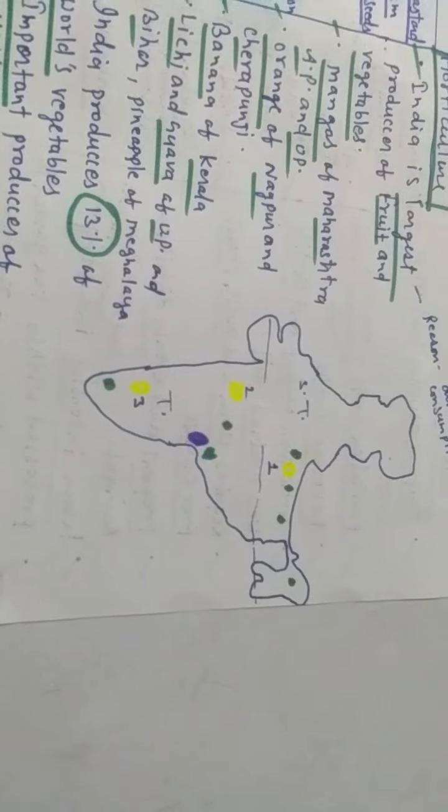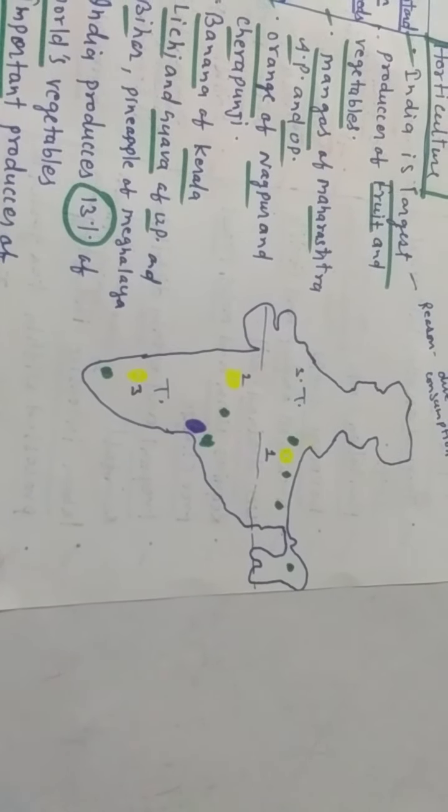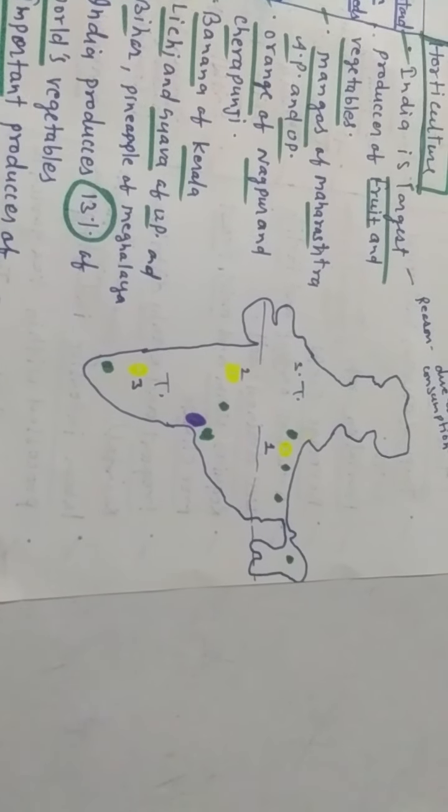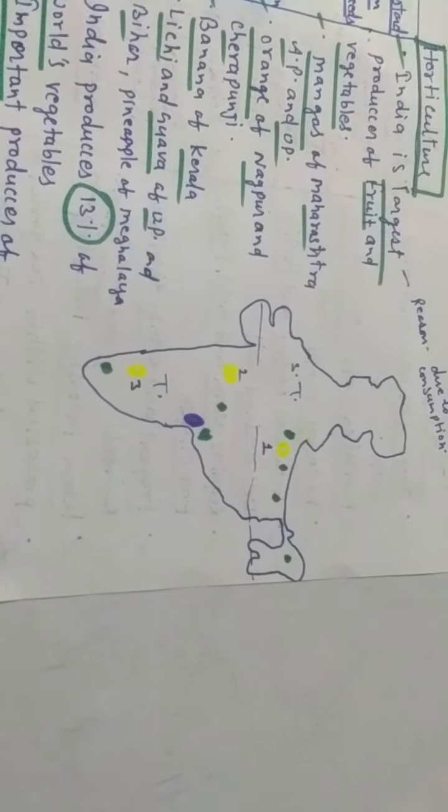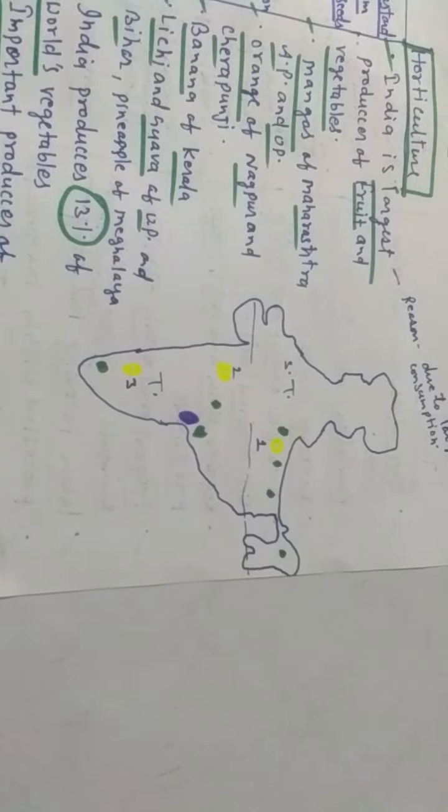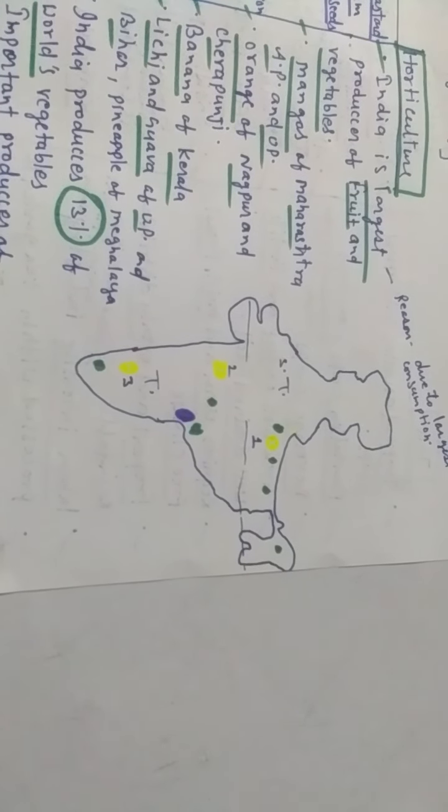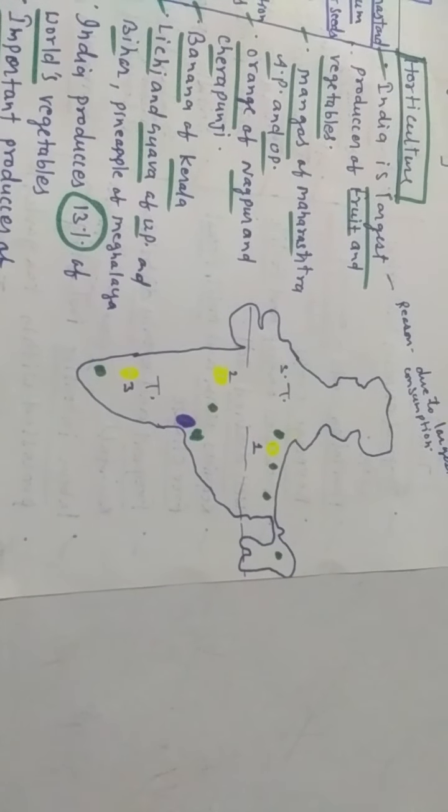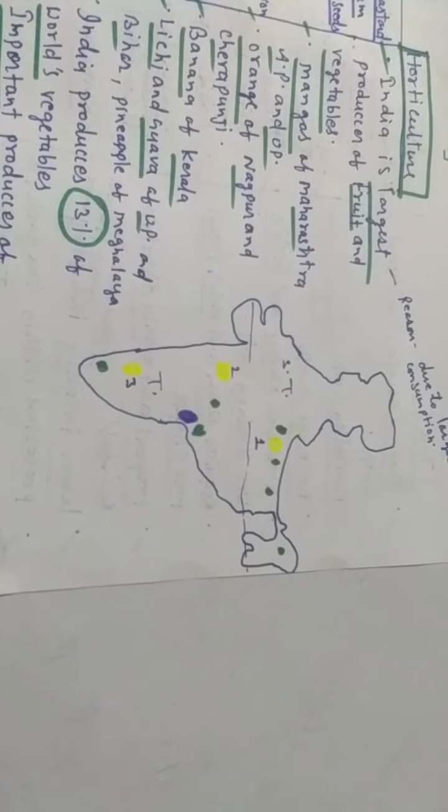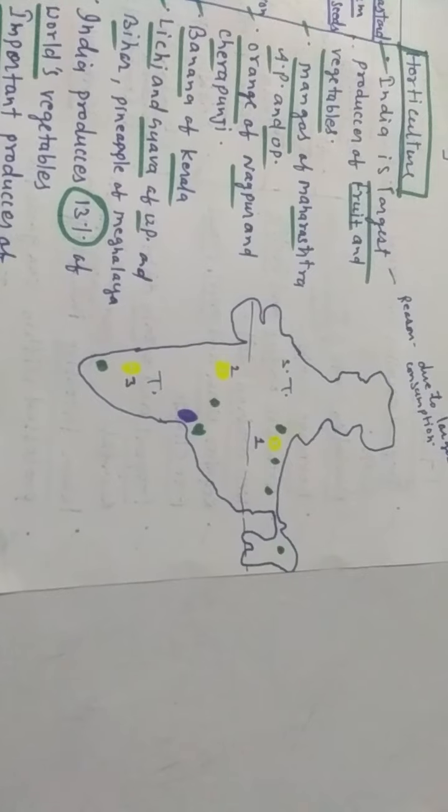You can see in the map sugarcane which we produce from UP, Maharashtra, and Karnataka. Oilseeds we mainly get from Andhra Pradesh. Various other states produce mangoes from Maharashtra, AP, and UP. Orange from Nagpur and Cherrapunji, banana from Kerala, lychee and guava from UP and Bihar, pineapple from Meghalaya.